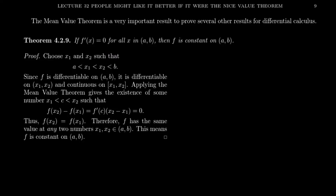Here is how we're going to do it. We're going to choose arbitrarily two numbers x1 and x2 which are inside this interval — so x1 and x2 are two numbers between a and b. Without loss of generality, let's assume that x2 is bigger than x1.